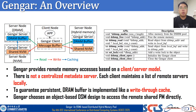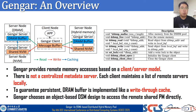Gengar provides remote memory access based on a client-server mode. There is a centralized metadata server, and each client maintains a list of remote servers locally. To guarantee that all data stored in the DSHM pool are persistent, the distributed DRAM buffer in Gengar is implemented like a write-through cache. Gengar chooses an object-based DSM design to access the remote shared persistent memory directly, and provides a very simple API to use the memory pool through objects. These abstractions allow programmers to use remote memory with very simple APIs, and thus can significantly facilitate RDMA programming.